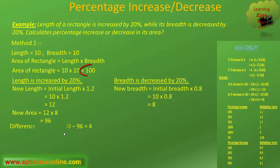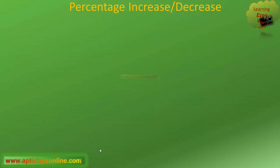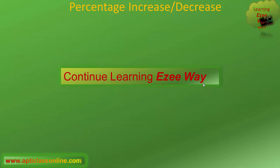Now, we know the initial area was 100 and the new area is 96, so the difference between the areas is 4. Just by looking at this, we can say that there is 4% decrease in area, as the new area is 4 less than 100, which was our initial area. So, in this class, we have seen that by using either of the methods, we can easily calculate the percentage increase and decrease in area. We will discuss more examples of different kinds in the next class. Till then, keep on practicing.